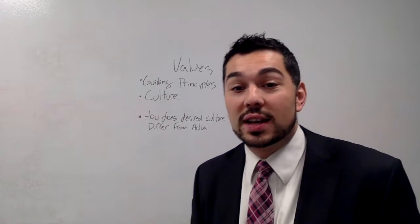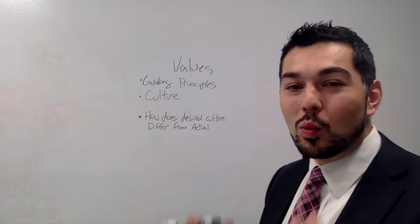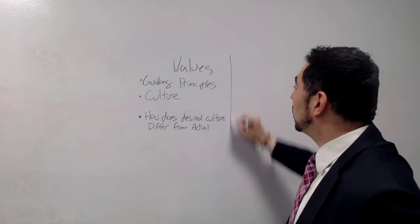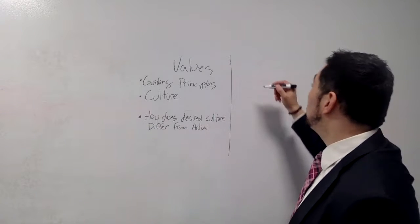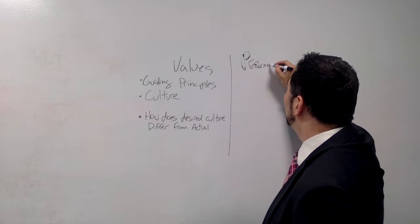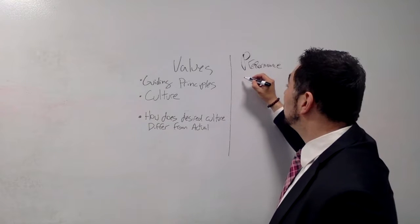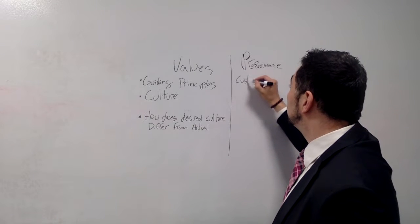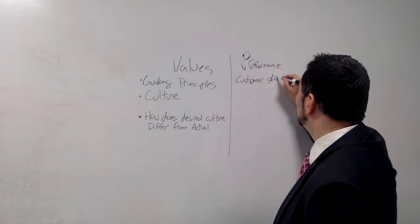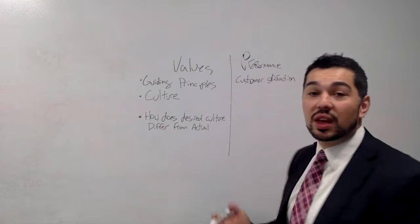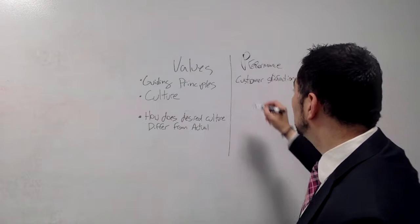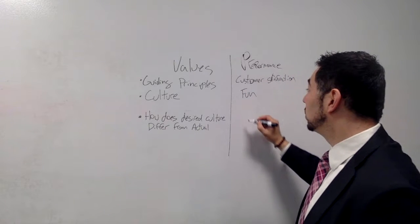So look at your organization and see the things that you care about. And this is a useful exercise, of course, as part of the strategic planning process, to say, what are the things that guide our behavior? What are the things that we really care about as part of an organization? So it might be performance. We mentioned customer satisfaction. Fun. Fun's a good one. Family.